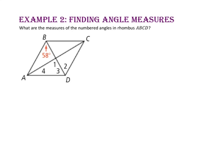In example 2, we will find angle measures. What are the measures of the numbered angles in rhombus ABCD? Since the diagonals of a rhombus are perpendicular, segment BD is perpendicular to segment AC, so angle 1 and all angles at the intersection are 90 degrees. Since the measure of angle ABD is 58 degrees, and alternate interior angles are congruent when we have parallel lines, the measure of angle 2 is also 58 degrees.